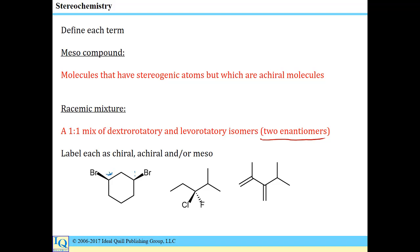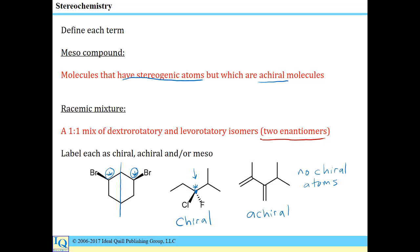Let's first look for stereogenic centers. We have some stereogenic carbons in the first molecule, a stereogenic carbon in the second, and no chiral atoms in the molecule on the right. If there are no chiral atoms, it can't be a meso compound and it can't be a chiral compound — this is achiral. In the case where there are chiral atoms, you have to evaluate whether it's a meso compound. The second compound has a chiral carbon and no plane of symmetry, so it's a chiral molecule. A meso compound occurs when you do have stereogenic atoms but there's also a plane of symmetry, so the molecule as a whole cannot be chiral. Every meso compound is achiral, so you would label it with both terms: it is a meso compound and it is achiral.